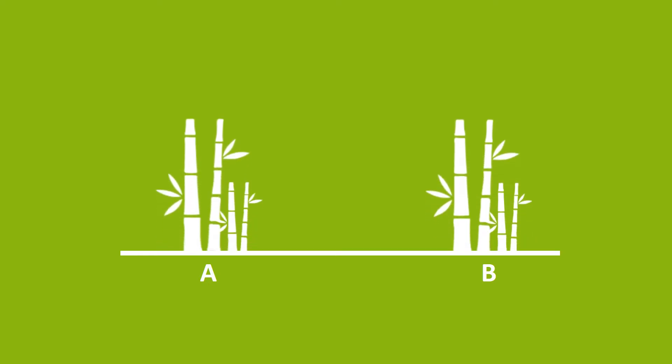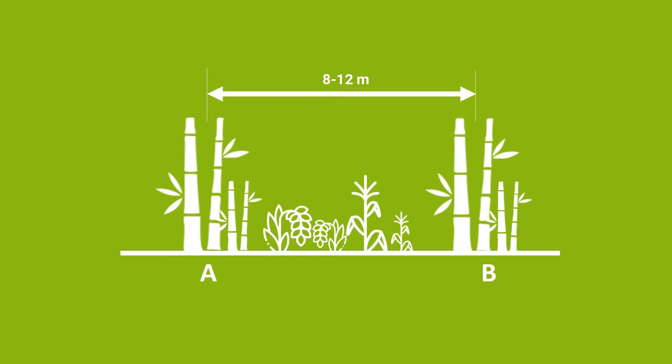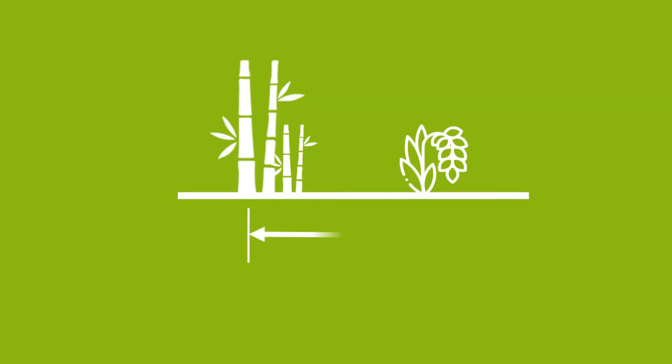In bamboo agroforestry, planting distances are very critical. The recommended planting distance is five by five meters. You can also use a six meter interval between your bamboos. But when you want to stay on your land for longer periods, you would need a wider planting distance — eight to twelve meters between your bamboo rows or scattered bamboo. It is also very important to leave two to three meters of space between the bamboo and your crops, because the bamboo canopy and roots will grow and need room to coexist with the crops.